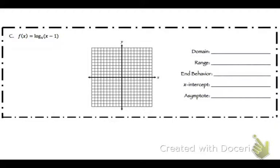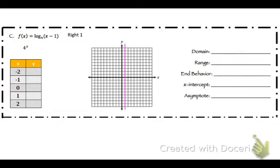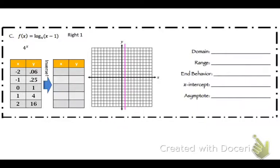Now let's do this one. Remember: inside goes left and right, outside goes up and down. We have x minus 1 inside, and since moving left and right is opposite of what you think, that minus 1 means go right 1. So I draw my new axis shifted right 1. I've dealt with the minus 1, so I make my table for 4 to the x power: 0.06, 0.25, 1, 4, 16. We invert that — x becomes 0.06, 0.25, 1, 4, 16 and y becomes negative 2, negative 1, 0, 1, 2.